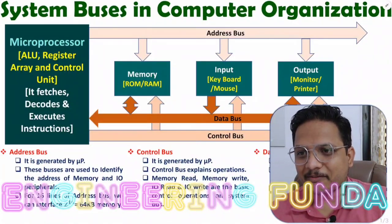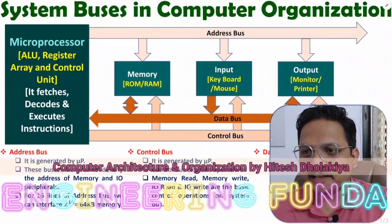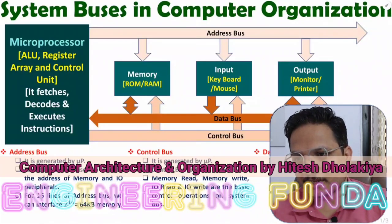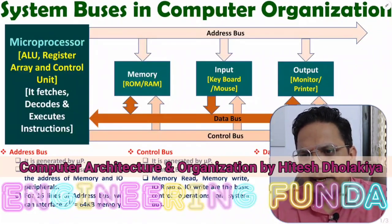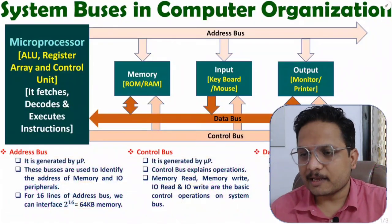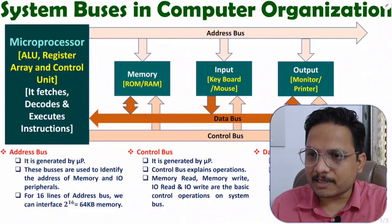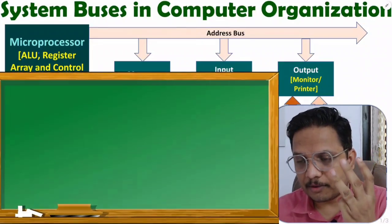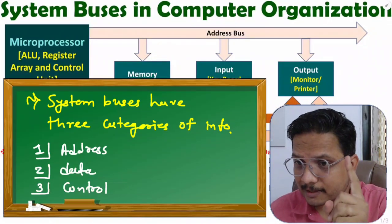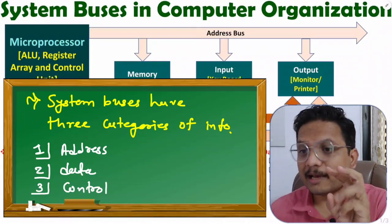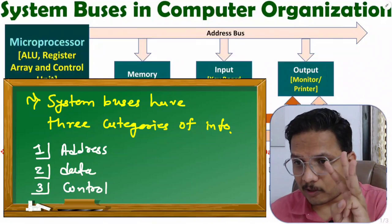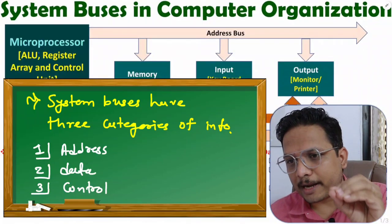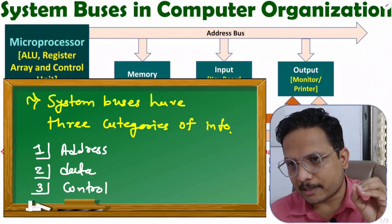Hello friends, welcome to Engineering Penta family. In this video, I am going to explain you system bus in computer organization. First of all, you need to understand what is the meaning of system buses. System buses have three major categories of information: first is address, second is data, and third is control signals. In this video, I will explain each and every basic point regarding system bus.